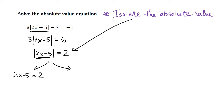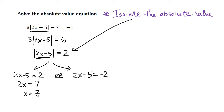It doesn't matter which one you put on the left or on the right. I have a tendency to start with the positive and then write the negative. To solve, we isolate x in each equation. We add 5 to get 7, then divide by 2 to get 7 halves. Our other solution: negative 2 plus 5 is 3, so x equals 3 halves.